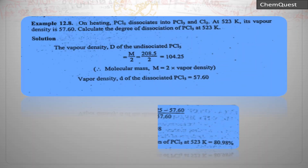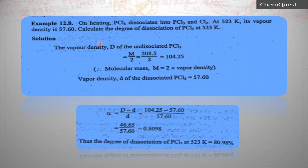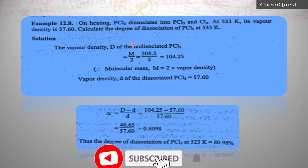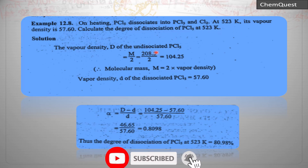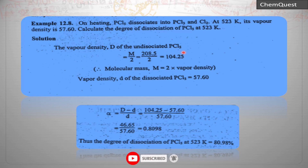Now we have a numerical problem: On heating, PCl₅ dissociates into PCl₃ and Cl₂. At 523 K, its vapor density is 57.60. Calculate the degree of dissociation of PCl₅ at 523 K. All the required values are given here, so the vapor density of undissociated PCl₅ needs to be calculated.